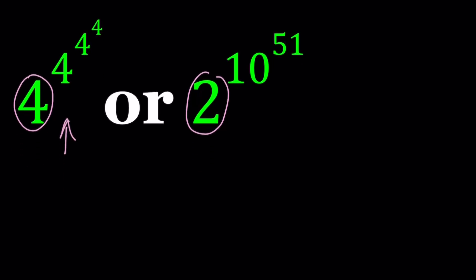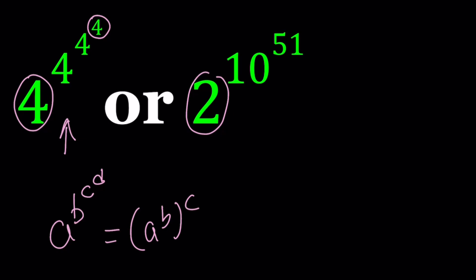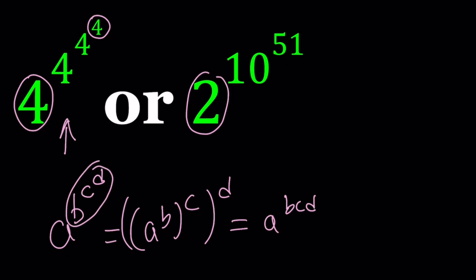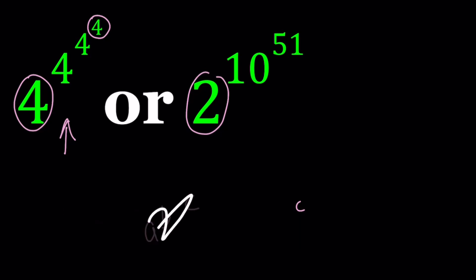So I'm going to start here because you've got to be careful. When I write something like a to the power b to the power c to the power d, this doesn't mean a to the power b·c·d — because if the exponent were b·c·d you would just write it that way. So this means something else: you have to start at the top and go down.